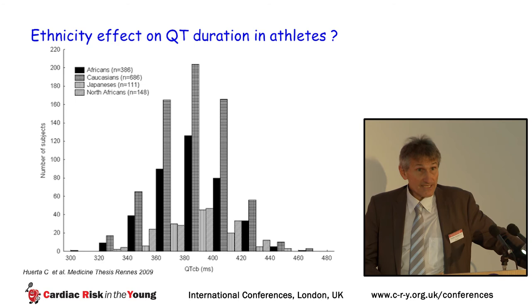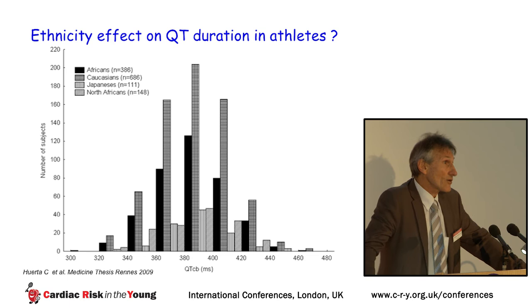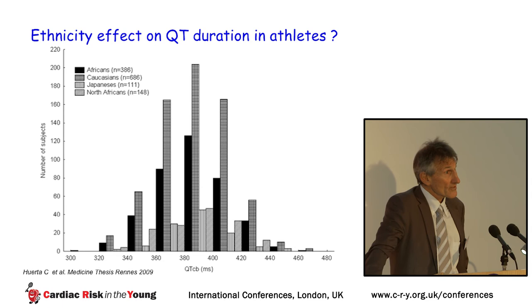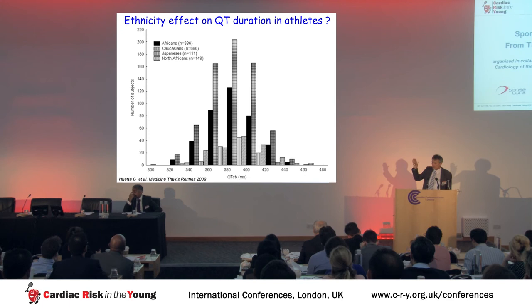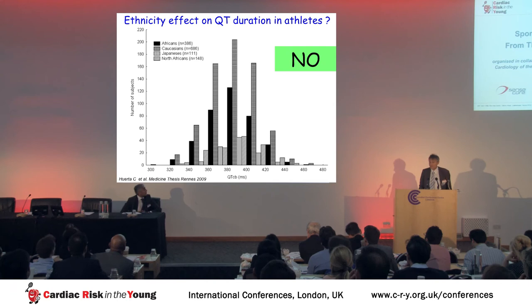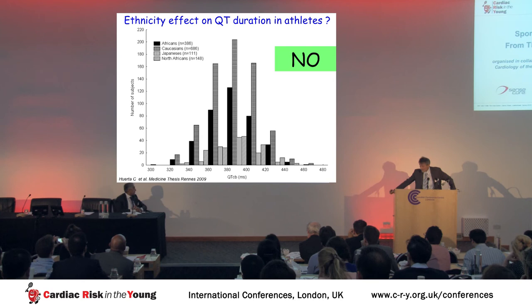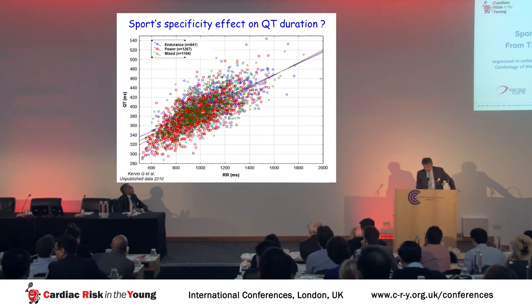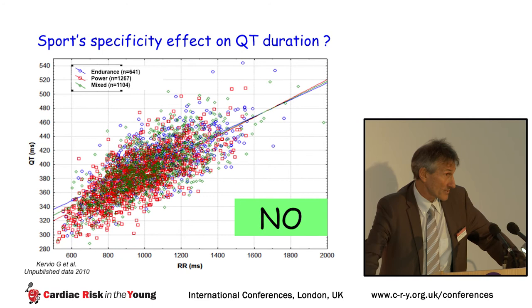Regarding ethnicity, we collaborated with Sanjay Sharma's group to compare QT duration in African, Caucasian, Japanese, and North African athletes. We observed no significant modification of QT duration associated with ethnicity. Similarly, comparing endurance, power, and mixed athletes revealed no significant difference in QT duration based on sport type practiced.